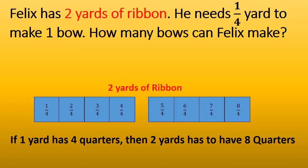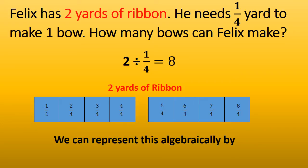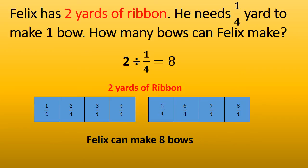Now we can see that if one yard has four quarters, then two yards has to have eight quarters. We can represent this algebraically as two divided by one quarter equals eight. And now we know that Felix can make eight bows.